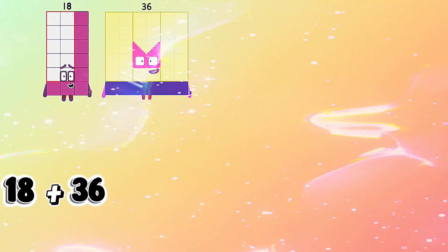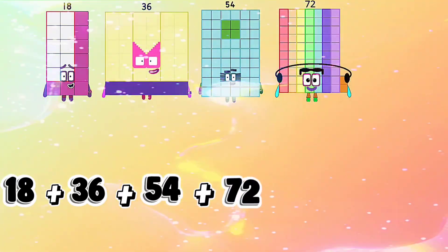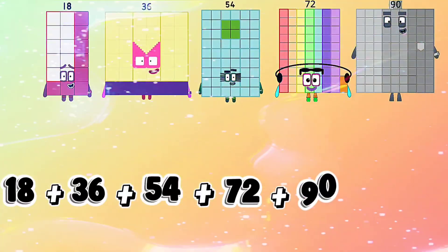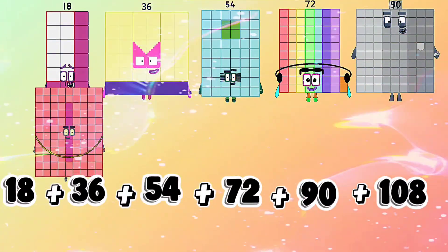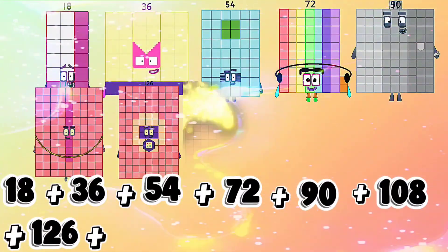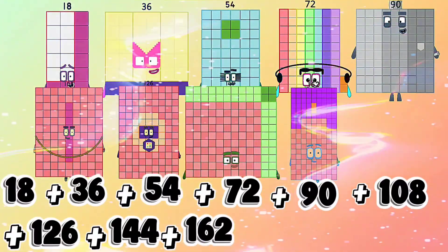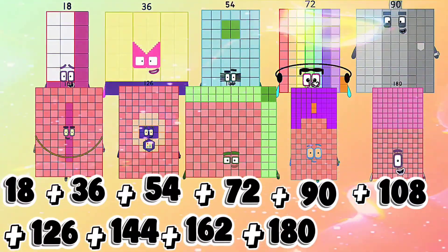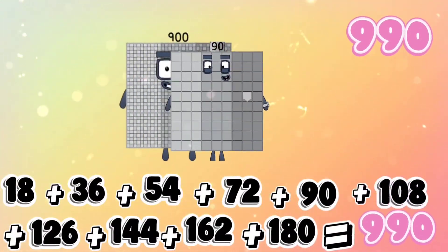Let's go. 18 plus 36 plus 54 plus 72 plus 90 plus 108 plus 126 plus 144 plus 162 plus 180 equals 990.